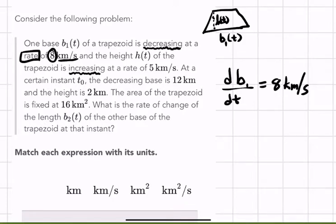Okay, so then the dh dt is increasing at 5 kilometers per second. Okay, so we identified two numbers so far. Let's keep rolling.